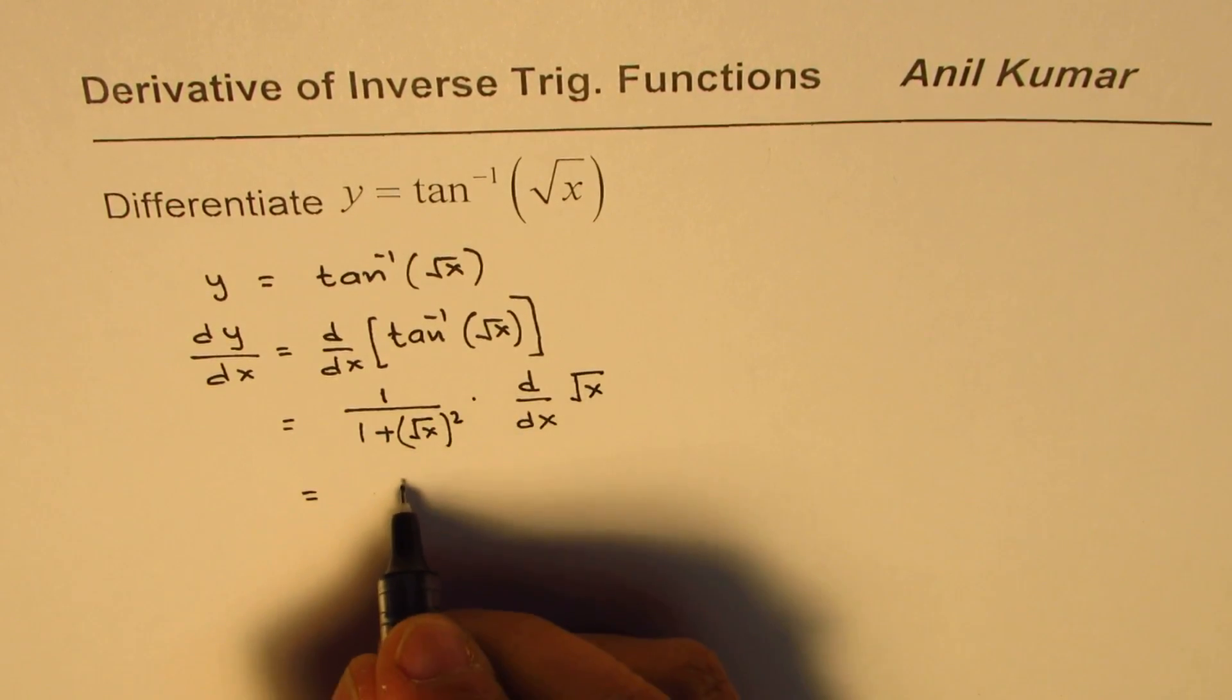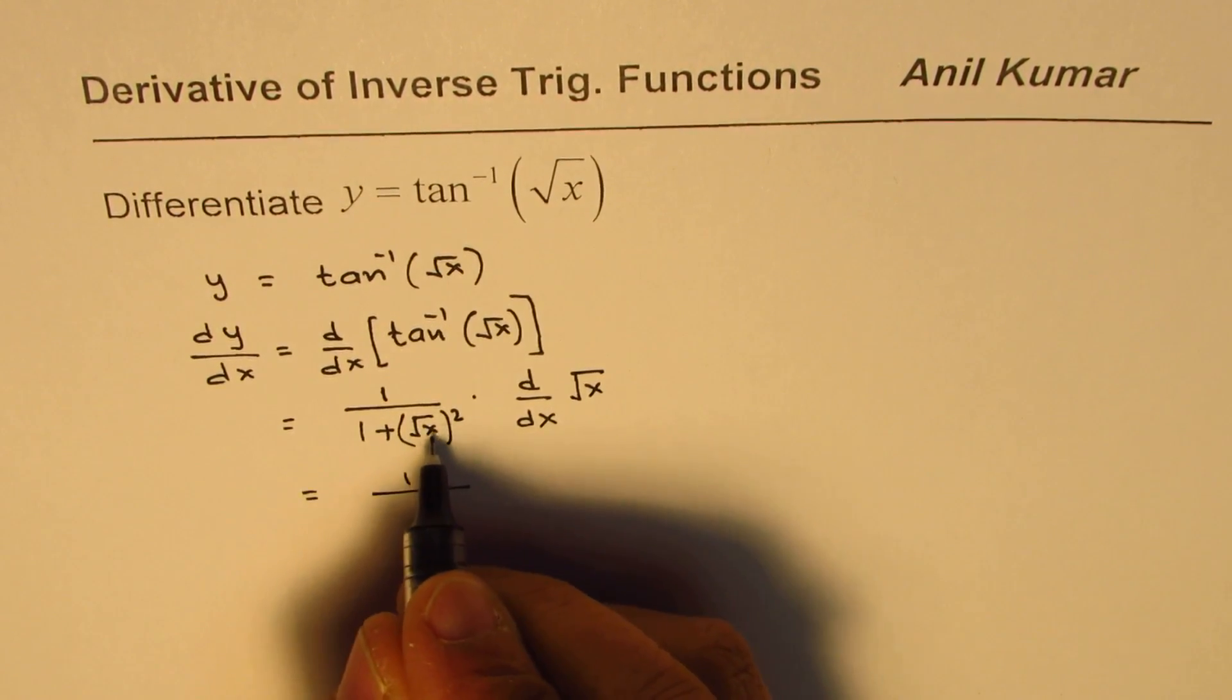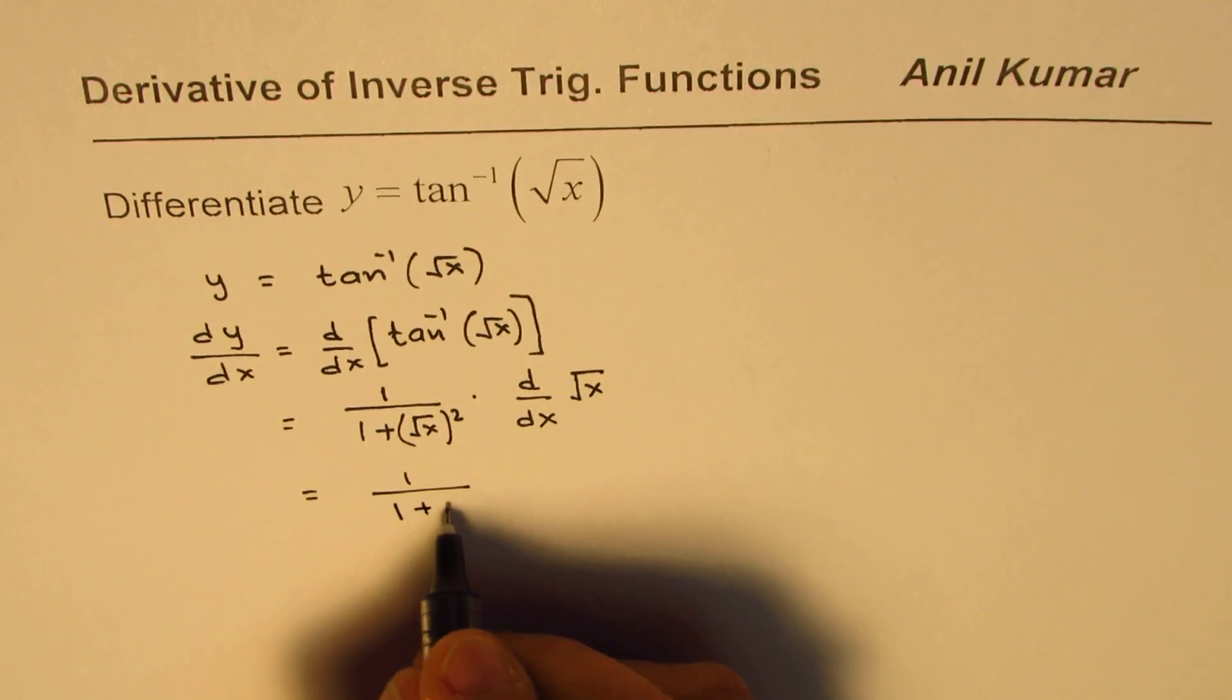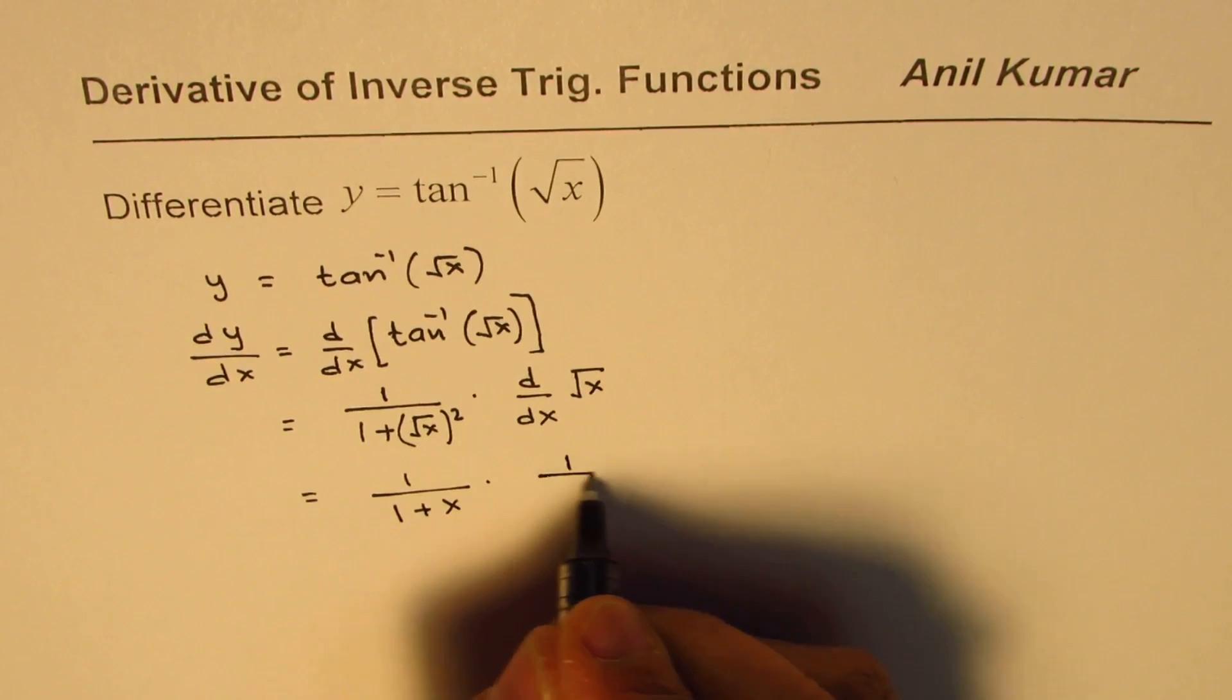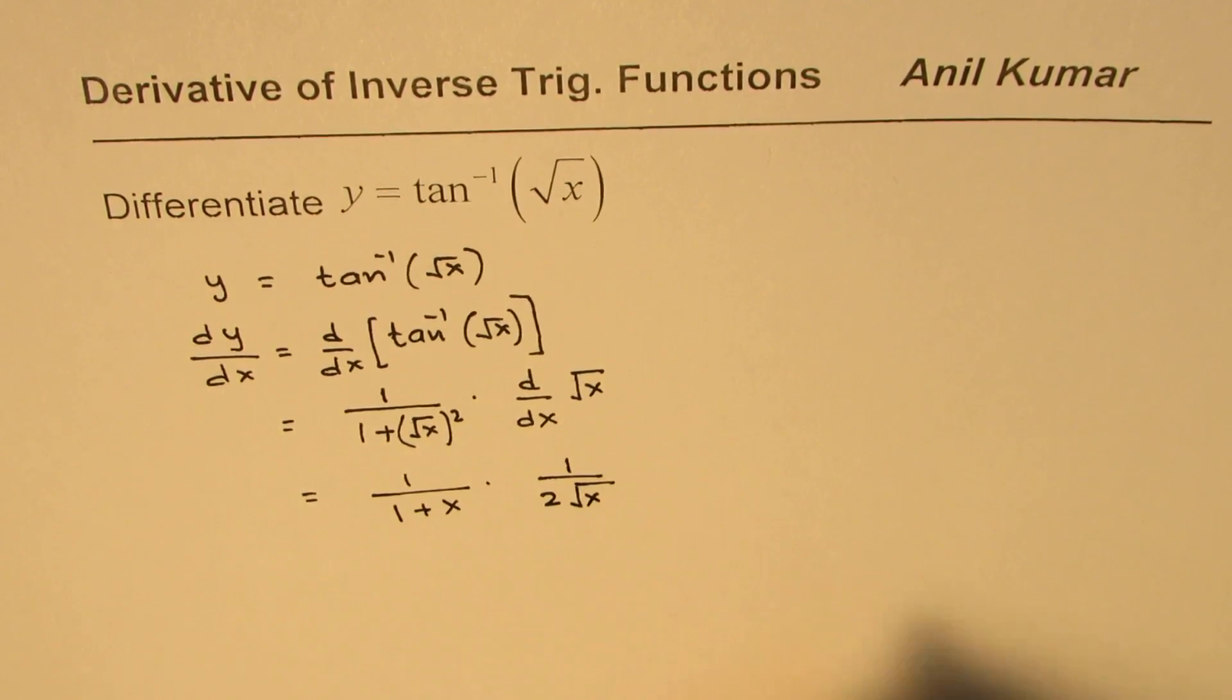Now that gives you 1 over, square root of x squared is x, so we get 1 over 1 plus x. And the derivative of square root of x is 1 over 2 square root of x.